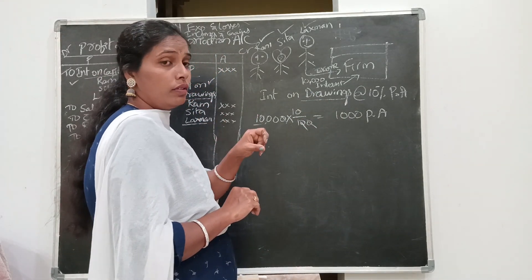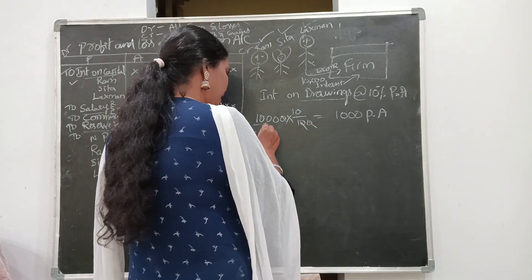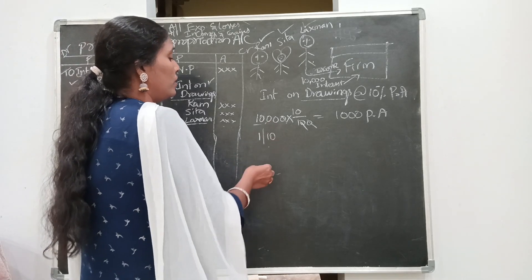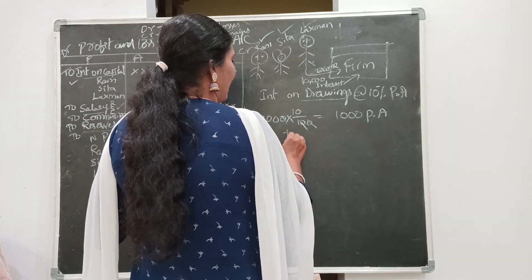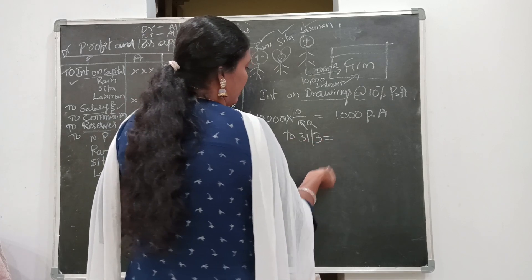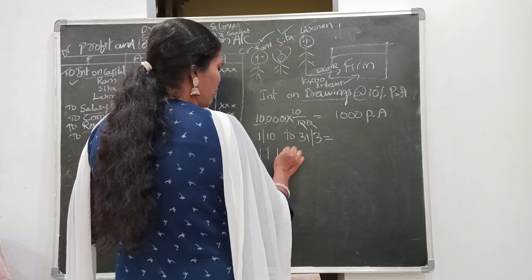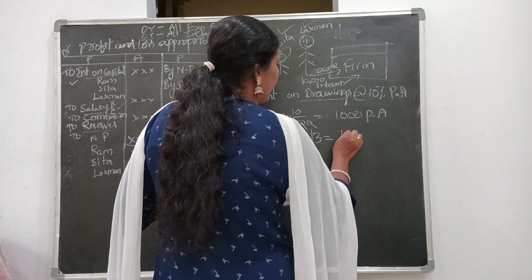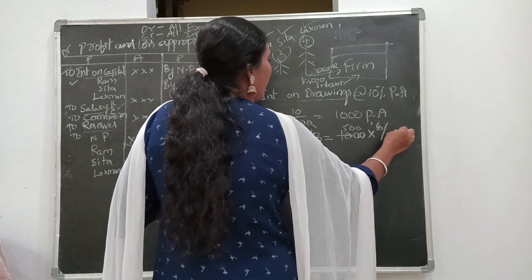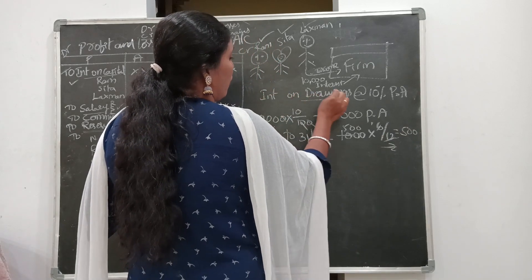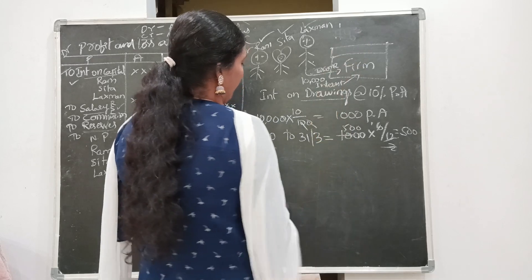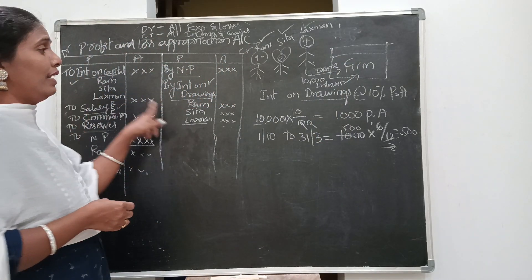If the partner withdraws amount in the middle of the year — for example, Lakshman withdrew 10,000 on 1st October — then from 1st October to 31st March is 6 months: October, November, December, January, February, March. So we calculate: 1,000 × 6/12 = 500. Lakshman has to pay 500 as interest on drawings to the firm. According to the nominal rule, all incomes and gains are shown on the credit side.